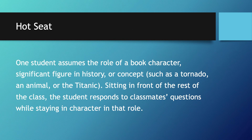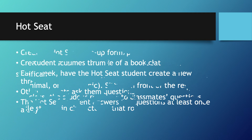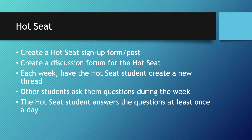One student assumes the role of a book character, significant figure in history, or a concept — such as a tornado, an animal, or the Titanic. Sitting in front of the class, the student responds to classmates' questions while staying in character. To move this online, create a schedule with discussion leaders and let students sign up for the week they want to play the hot seat role in Blackboard. Each week that student leads the discussion in character. Require other students to post one question, give them guidance on what makes a good question, and have the hot seat student answer questions throughout the week — ideally at least one question a day to keep the conversation going.